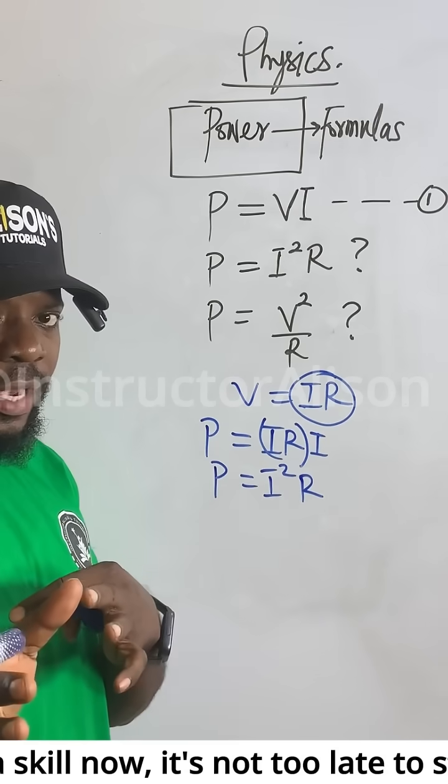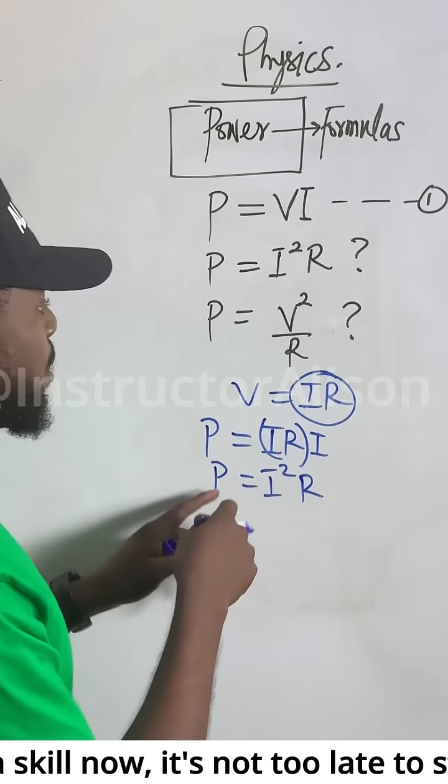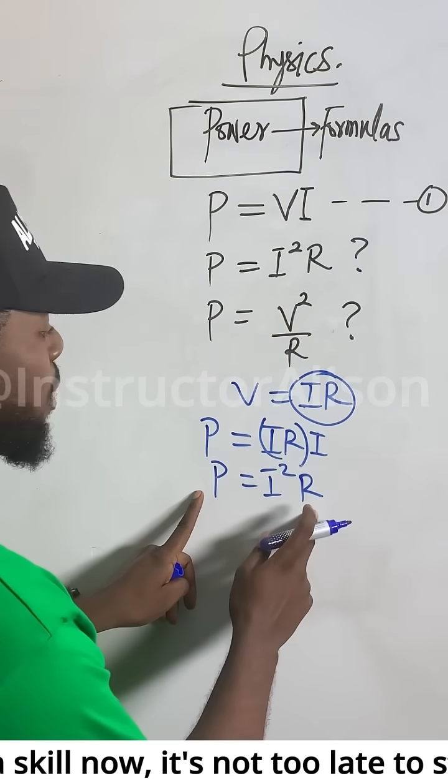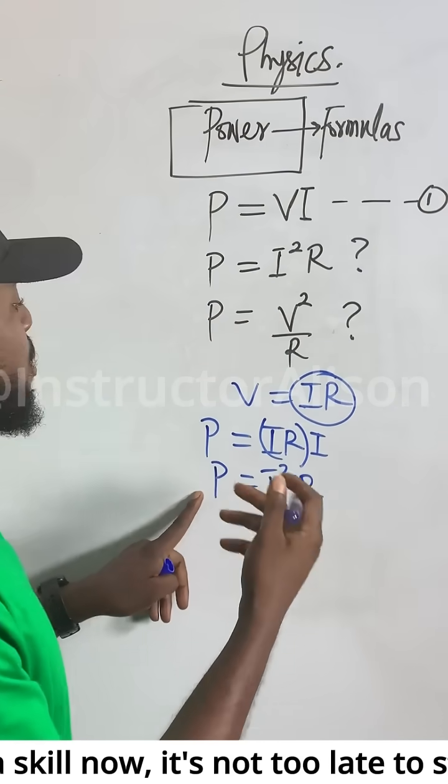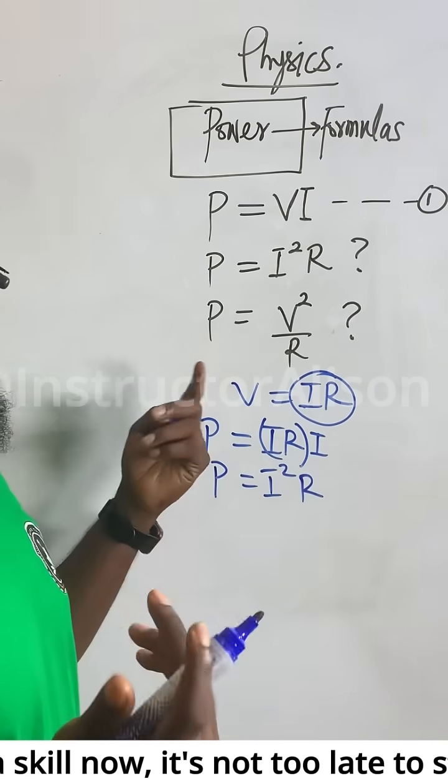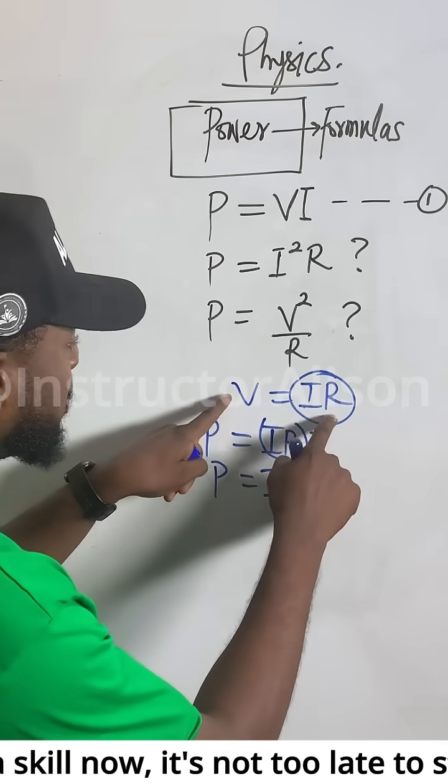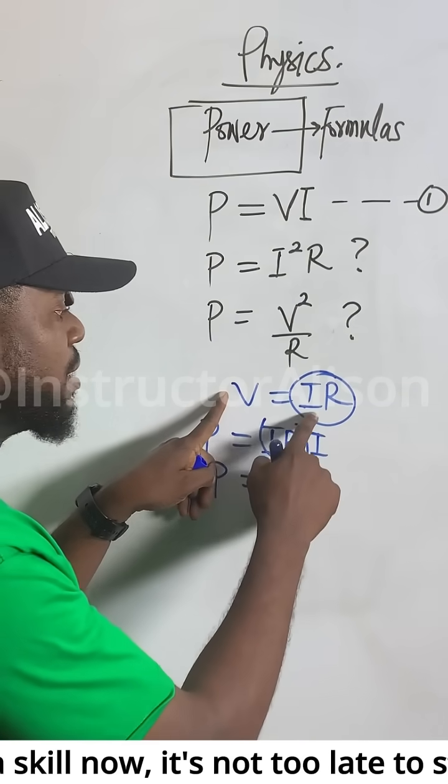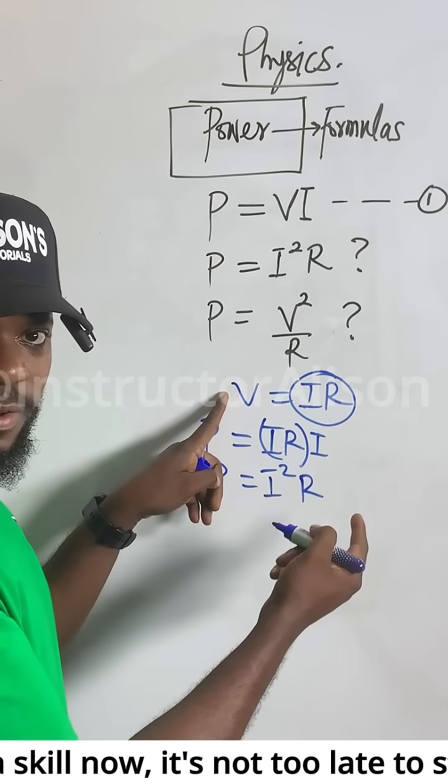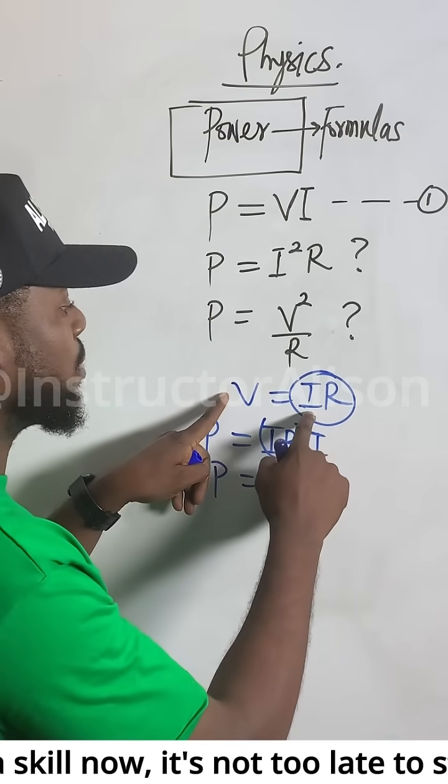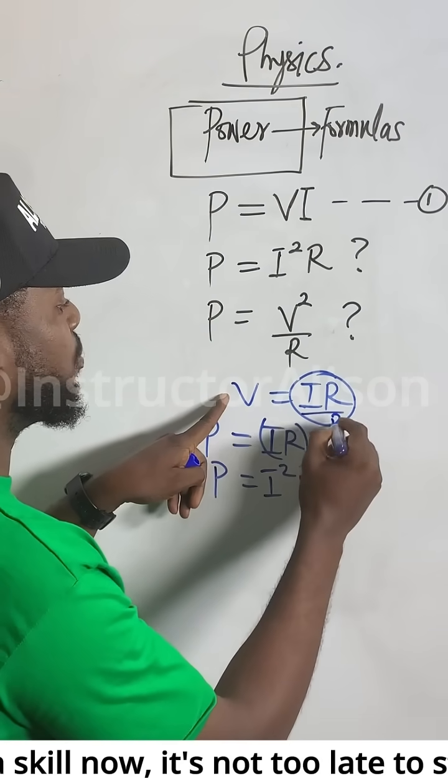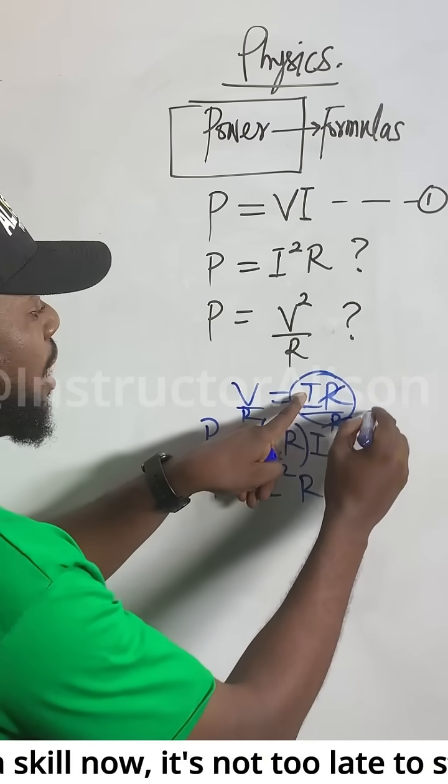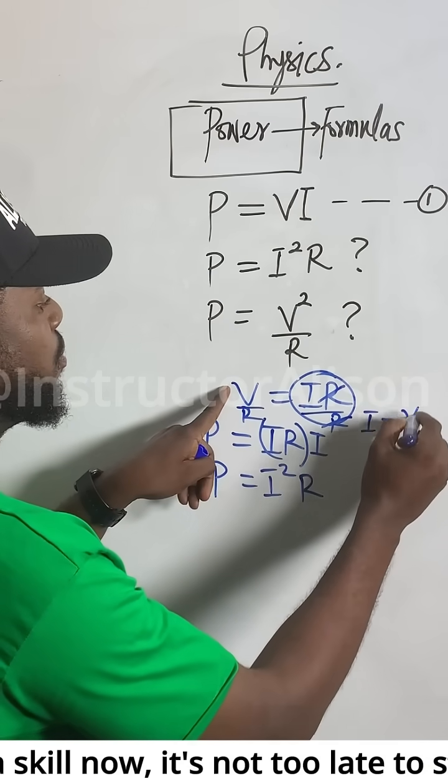Let me run the last one. How can we get this particular one? It is very simple too. If you decide to make this I the subject of the formula, it's a change of subject. So if you make I stand alone, you divide both sides by R. This one and this one will cancel. You say I now will be equal to V over R.